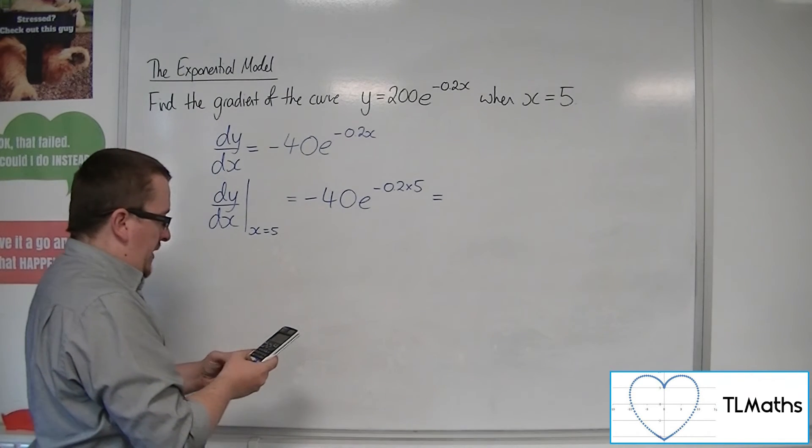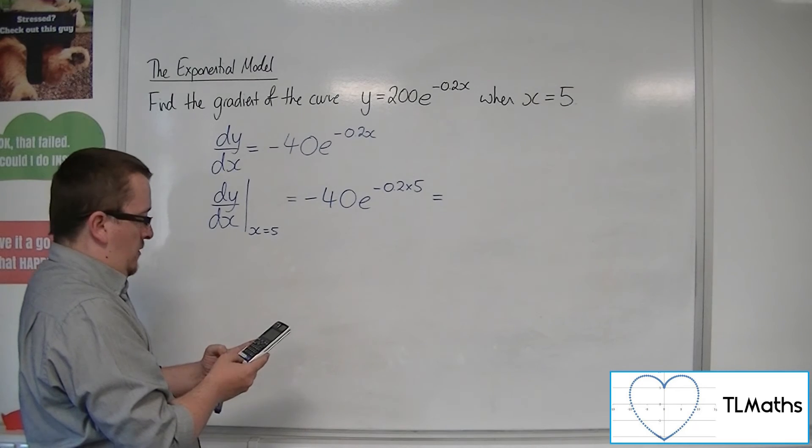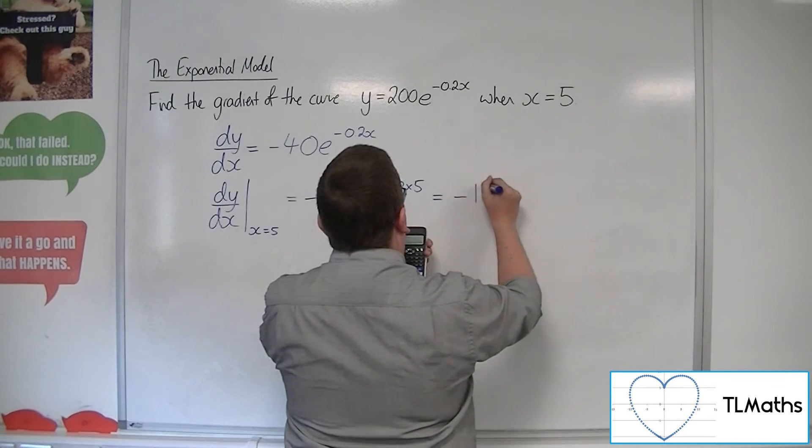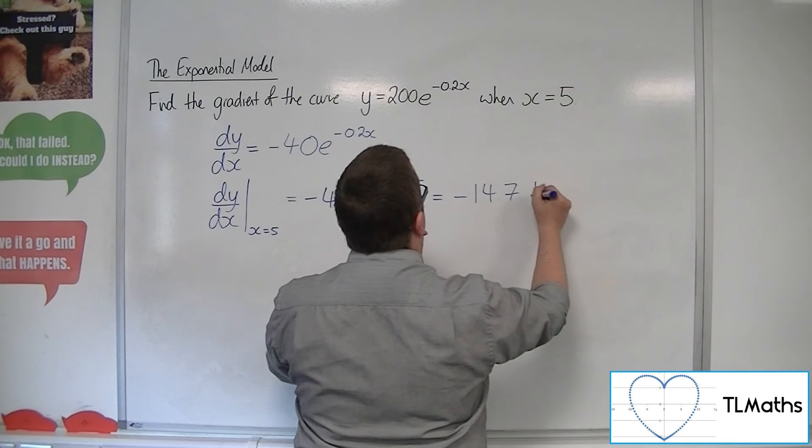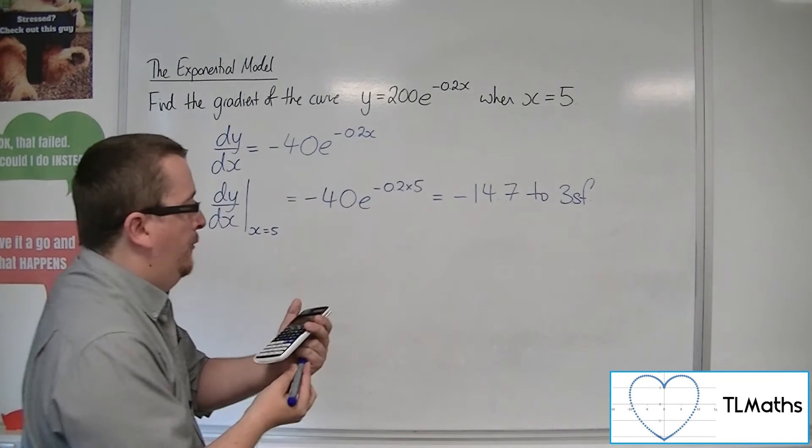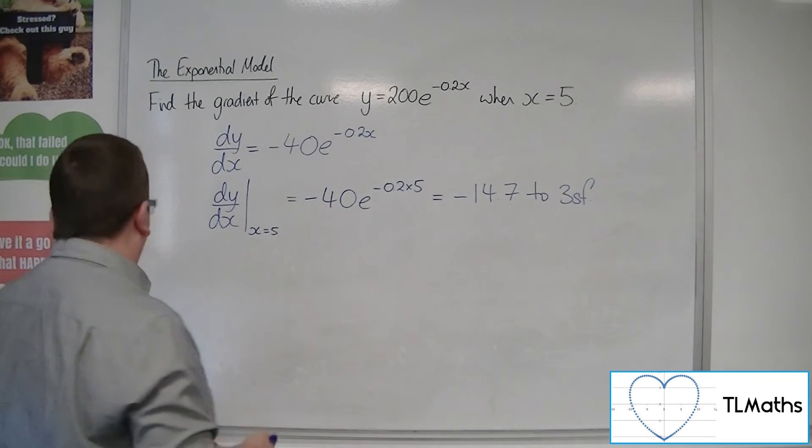So minus 40 times e to the minus 0.2 times 5 is equal to minus 14.7 to three significant figures. Minus 14.71517765 on the calculator.